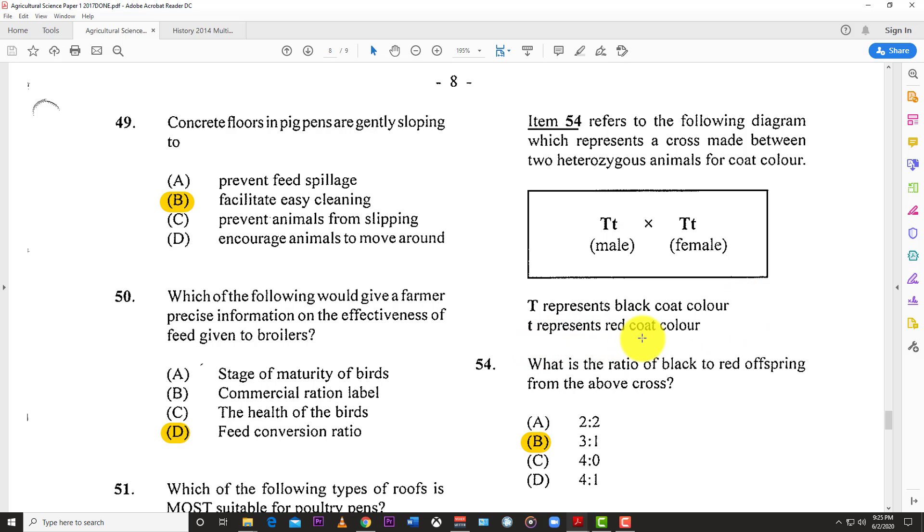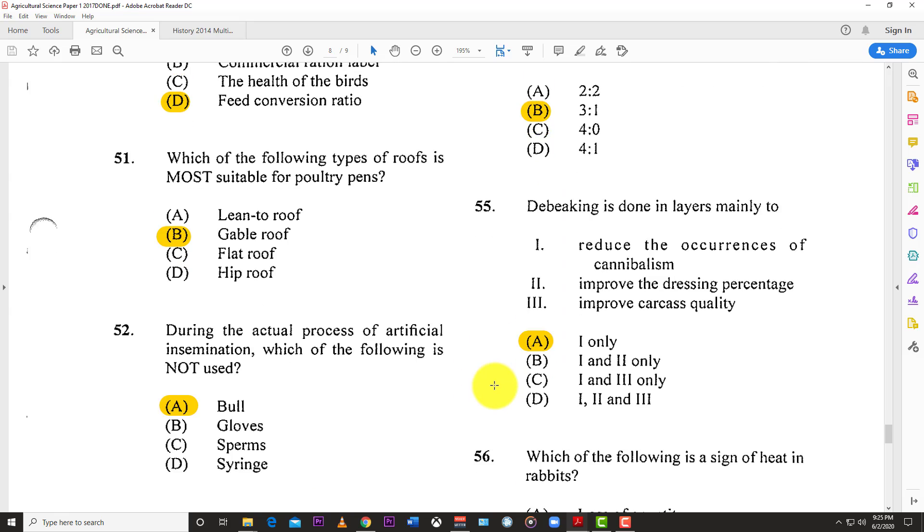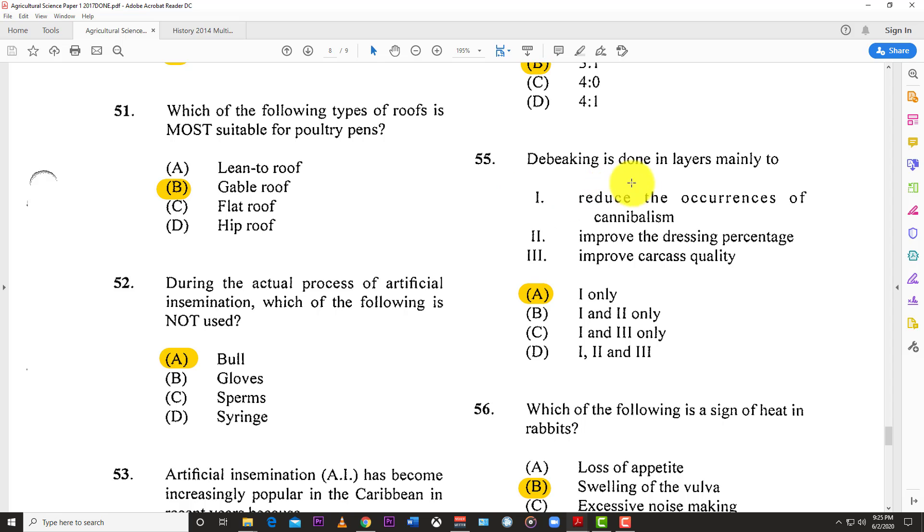Number fifty-three: Artificial insemination has become increasingly popular in the Caribbean in recent years because regional governments have been expanding the service. Number fifty-four refers to this genetics diagram. T represents black coat color, and small t represents red coat color. What is the ratio of black to red offspring from the above cross? The answer is B, three to one. You're going to get three that contain black coats and just one with two small t's based on the Punnett square.